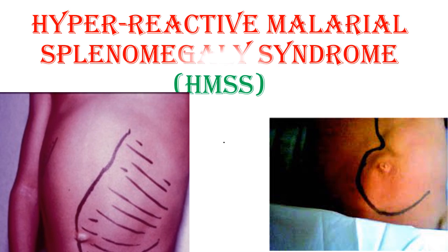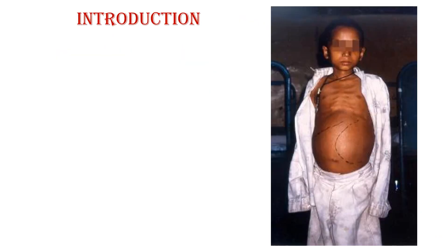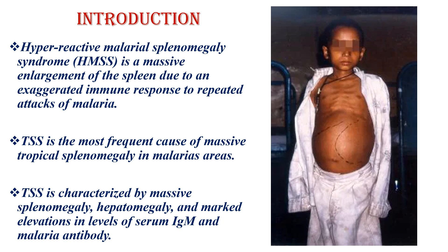Hyperactive Malarial Splenomegaly Syndrome, also known as Tropical Splenomegaly Syndrome, is a massive enlargement of the spleen due to an exaggerated immune response to repeated attacks of malaria. It is the most frequent cause of massive tropical splenomegaly in malaria-endemic areas.